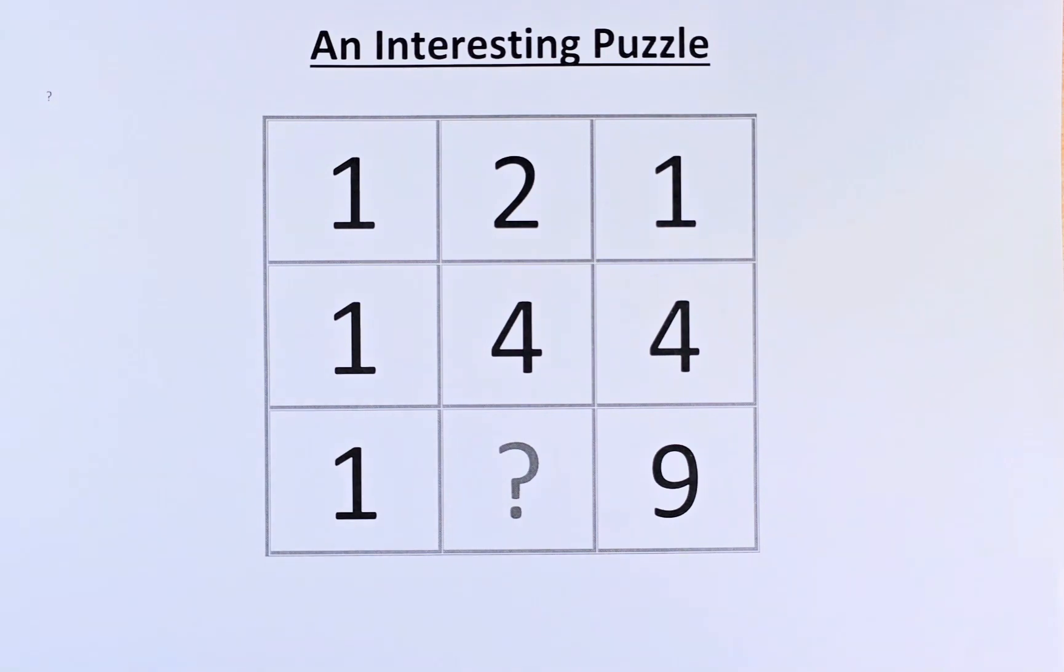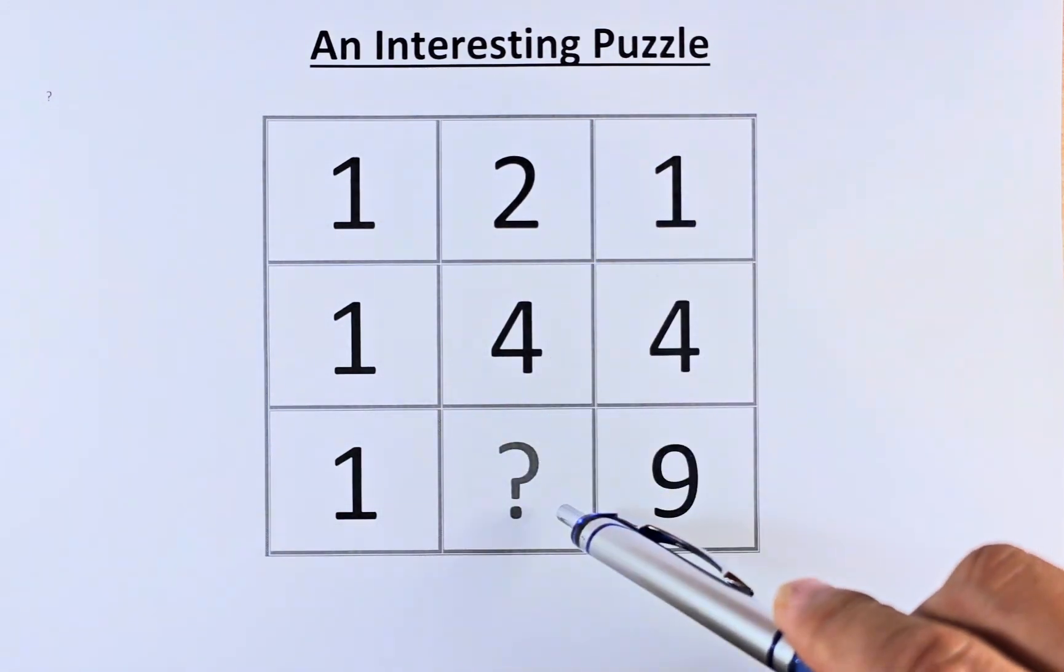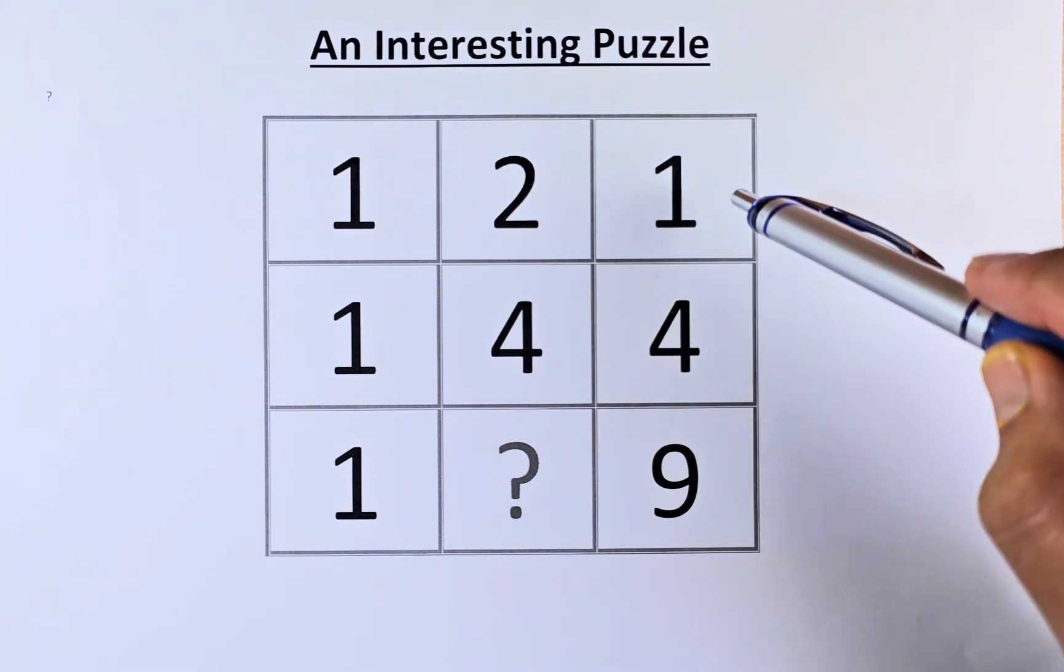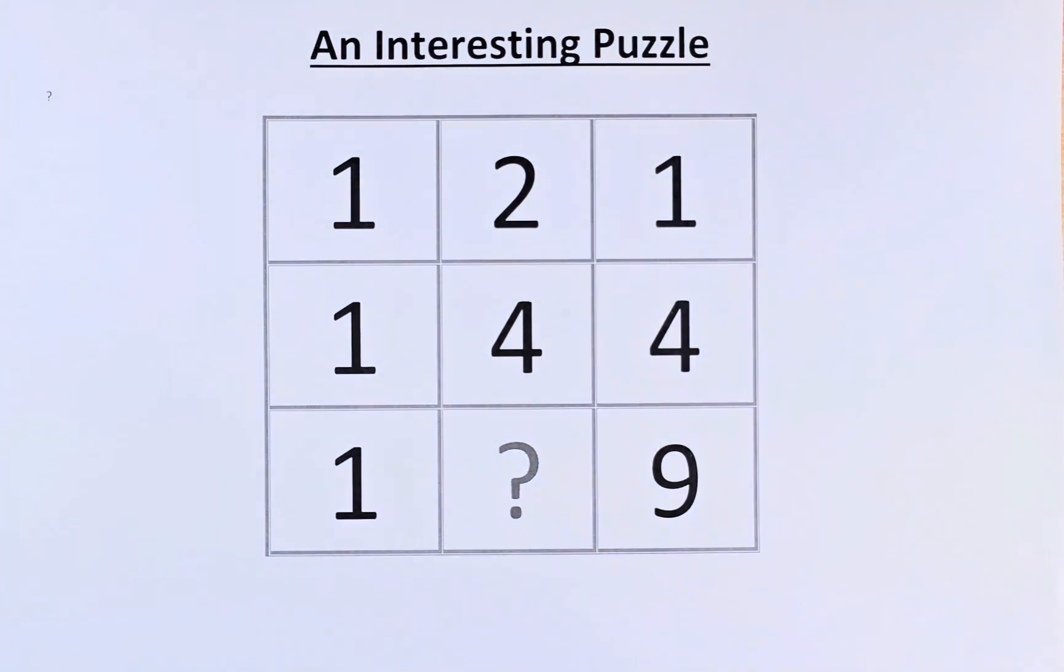So without further ado, let's try to solve this puzzle. If you look at the first column, 1, 1, 1. Second row, 2, 4, and a number. And in the third column, we have 1, 4, and 9. So this sounds interesting.